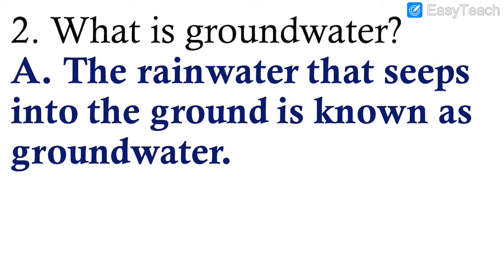Question number two: What is groundwater? The rainwater that seeps into the ground is known as groundwater. When there is rainfall, the water goes inside the ground — that is called groundwater. The word 'seeps' means flows slowly through, so the rainwater that flows slowly through into the ground is known as groundwater.